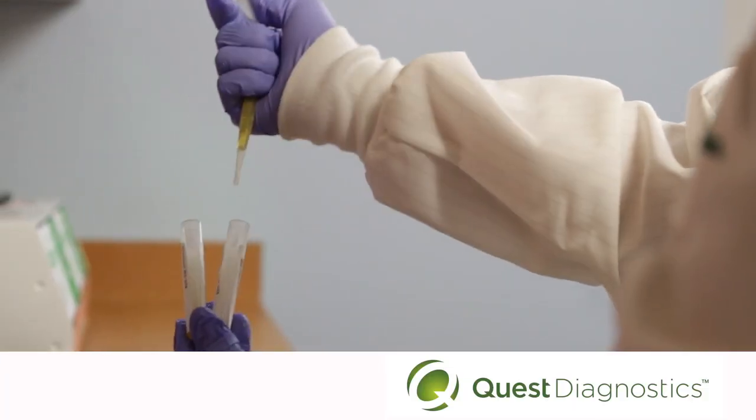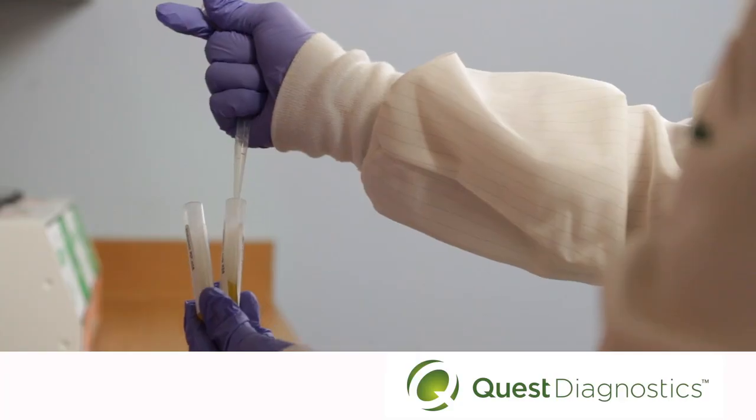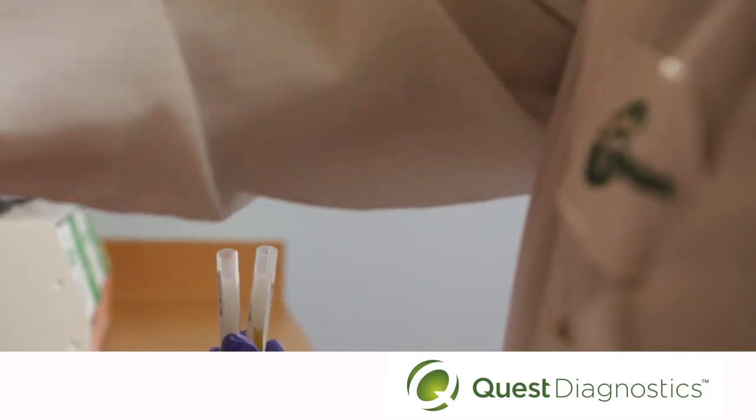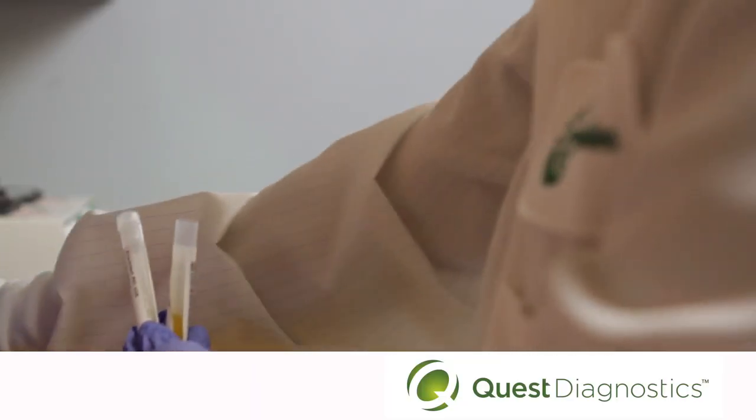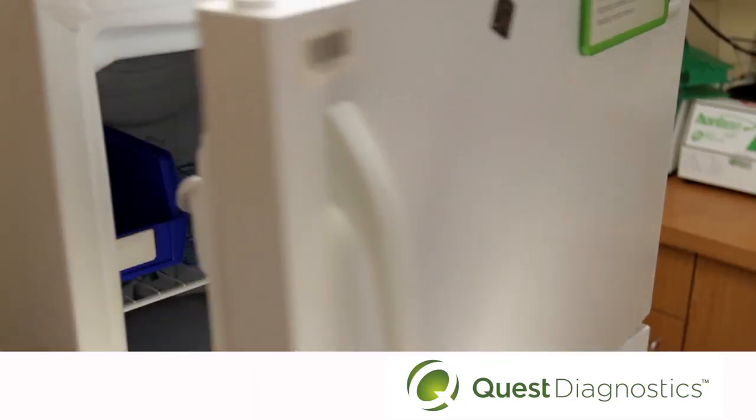Pipette the plasma from the second spin into a labeled aliquot tube. Remember, you need to pipette the plasma and do not disturb the bottom one half milliliter. Promptly cap and freeze the specimen.